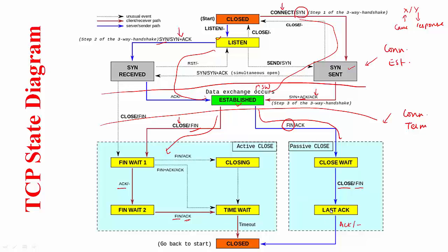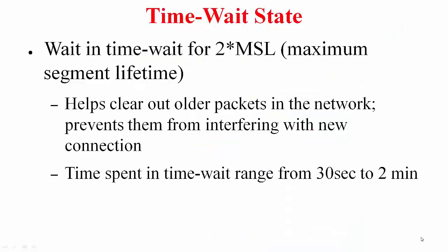Once this ACK comes, the server also goes to the closed state. A key point to note is that the client does not directly jump to closed — it waits in a special state called TIME_WAIT. So when terminating a connection, before fully terminating and going to the closed state, one side waits in the TIME_WAIT state. The reason for this I will get to shortly. This state diagram does not capture all cases — what I have shown via the blue and red lines is the typical scenario. There are other transitions as well, which I will leave as an exercise for you.